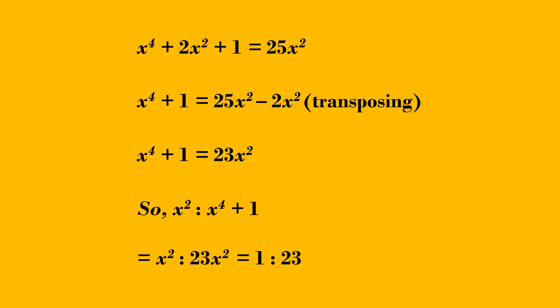We get x square by 23x square. Cancel x square from numerator and denominator. The required answer is 1 is to 23.